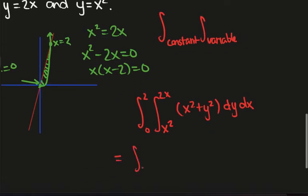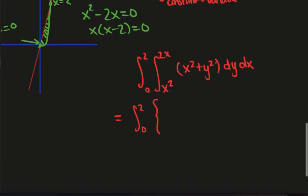And we just proceed as we did before. So I've got the integral from 0 to 2. The integral of x squared with respect to y is x squared y, and then I'll have a 1 third y cubed. And then x squared 2x dx.